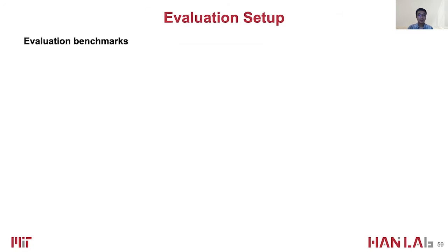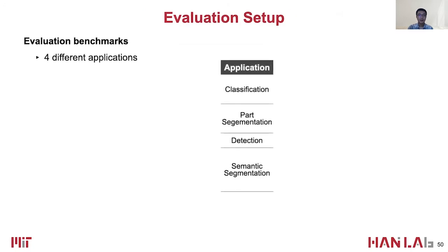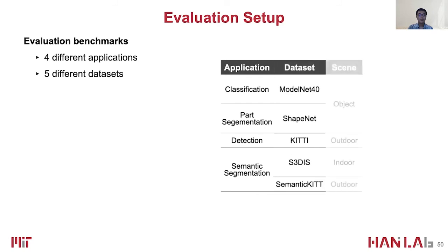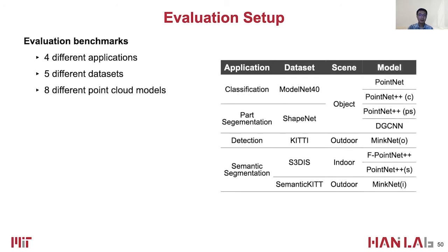Now let's see our experimental results. We evaluate on four different point cloud applications: classification, part segmentation, detection, and semantic segmentation. We use five different datasets containing various sizes and modalities for input point clouds, from daily objects to indoor scenes to large-scale outdoor scenes. We pick eight point cloud networks, including both classical and state-of-the-art ones, which are widely adopted by the point cloud deep learning community.